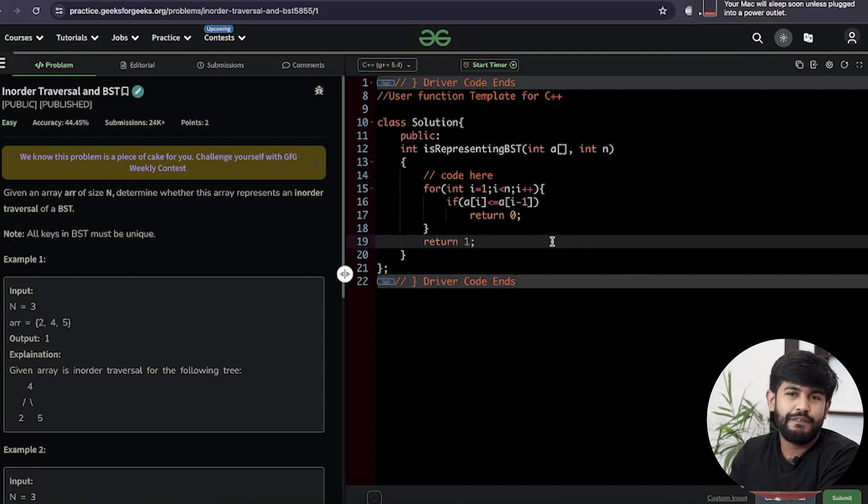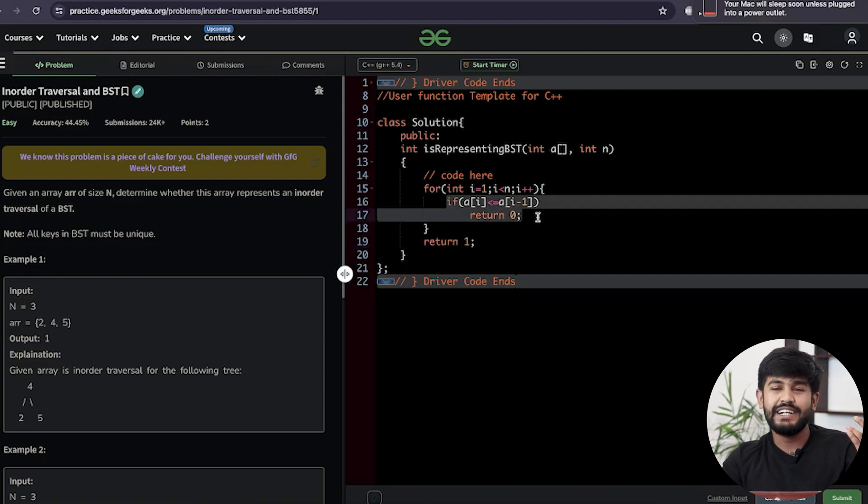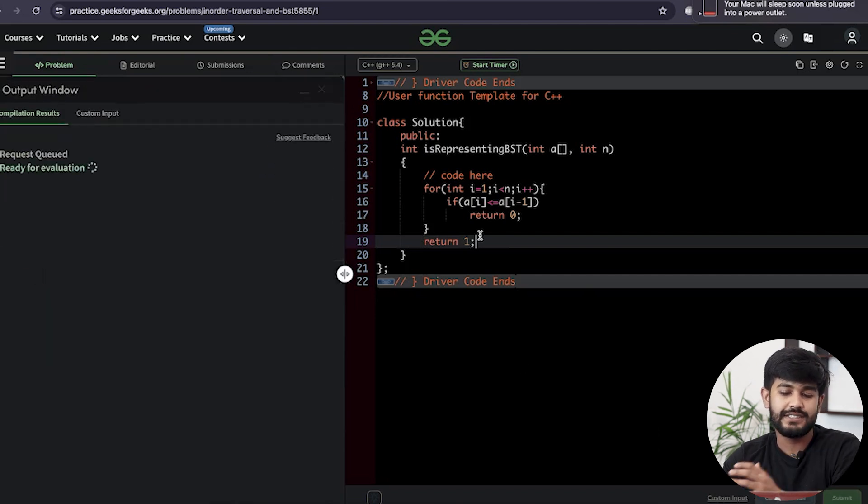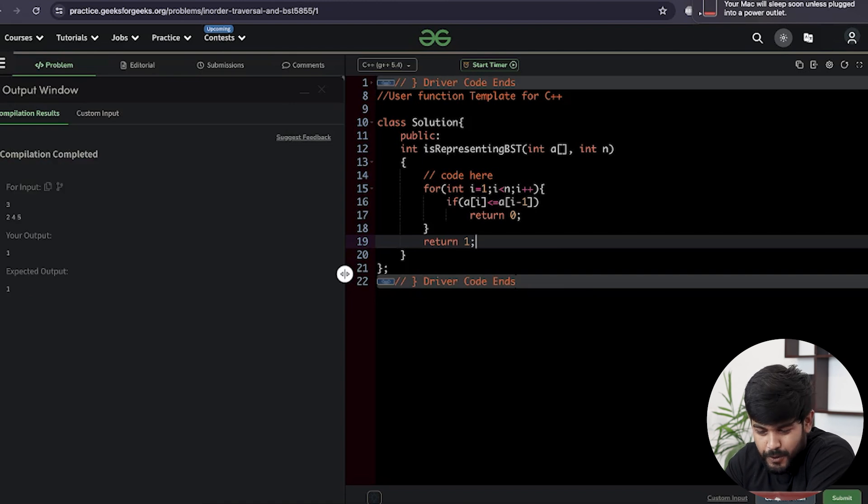If we didn't find the invalid condition till the very end, then we have true. If I got into a relationship and didn't find any red flags till the end, the relationship would be a success. In the same manner, if I didn't find any invalid condition, it is a perfectly in-order traversal of a BST. Now we compile it and see how many errors we're making.